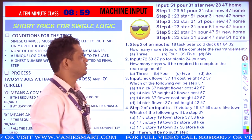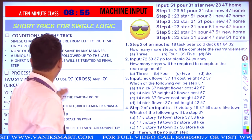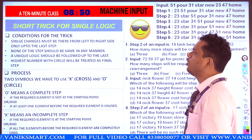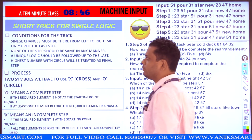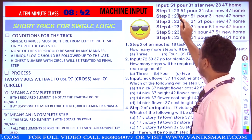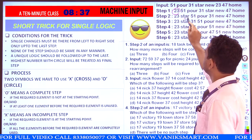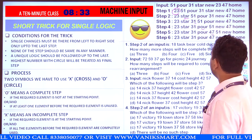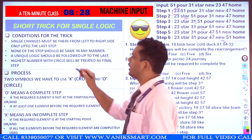इसको सिर्फ और सिर्फ step omit के लिए use किया जा सकता है। यहाँ पर जो conditions हमने रखे हैं वो single logic के लिए हैं: single changes must be there from left to right side only, up to the last step। और इस प्रकार वो changes हुए, इसका मतलब है कि पहली condition दी गई है।